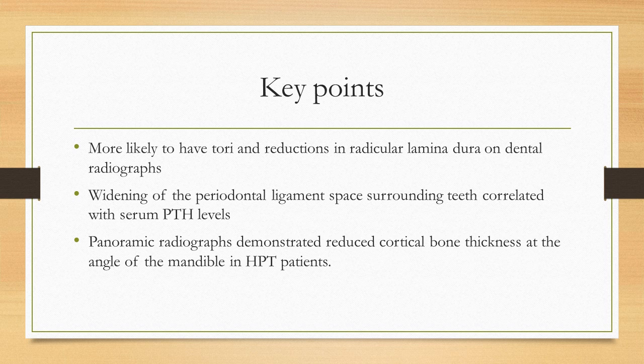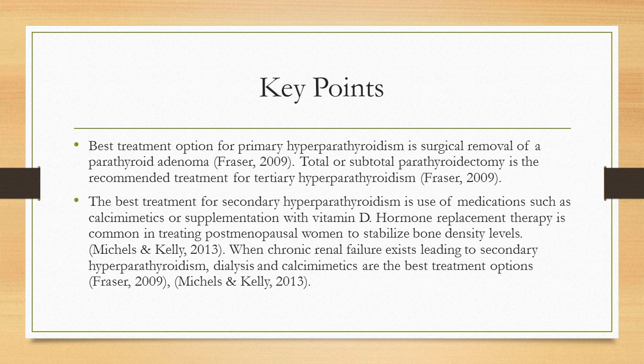Finally, the key points of the presentation: people with hyperparathyroidism are more likely to have tori and reductions in radicular lamina dura on dental radiographs, as well as widening of the PDL space surrounding the teeth correlated with serum PTH levels. Panoramic radiographs also demonstrated reduced cortical bone thickness at the angle of the mandible. The best treatment for primary hyperparathyroidism is surgical removal of a parathyroid adenoma. A total or subtotal parathyroidectomy is the recommended treatment for tertiary hyperparathyroidism.